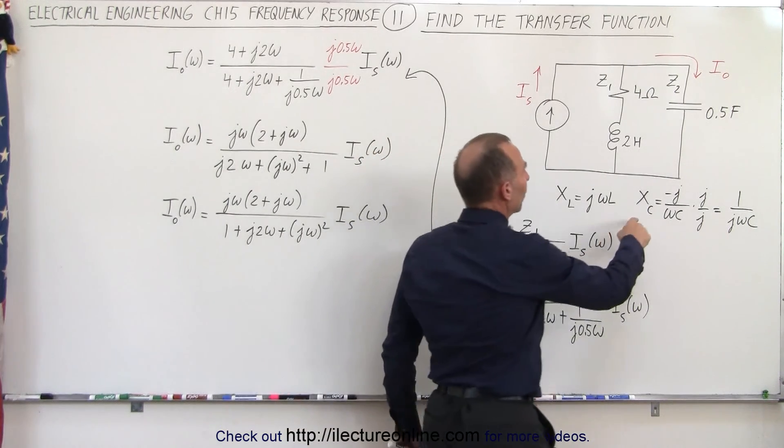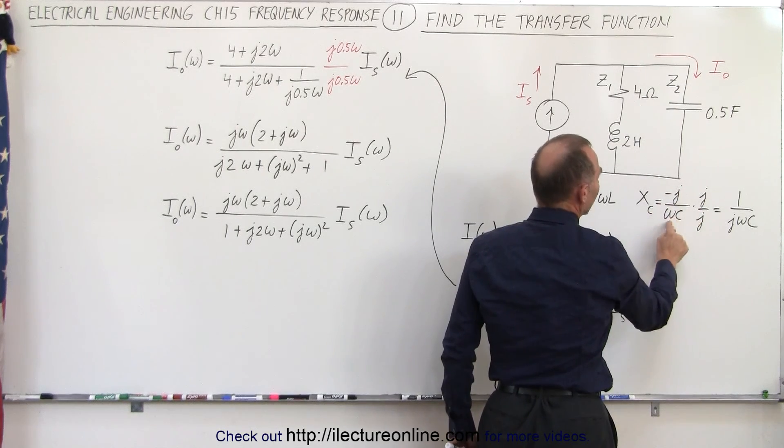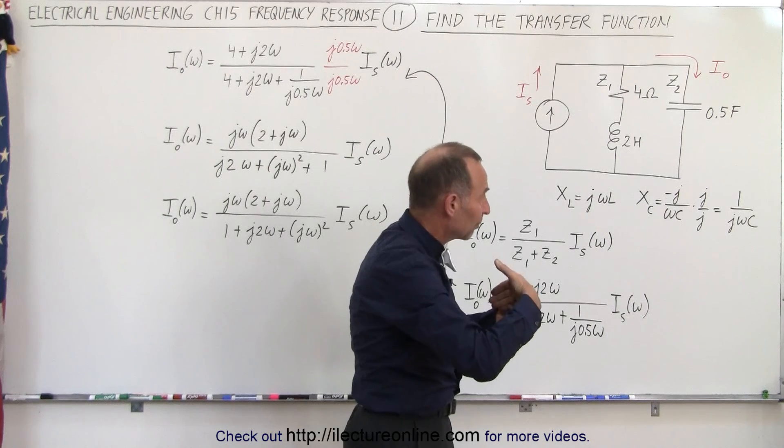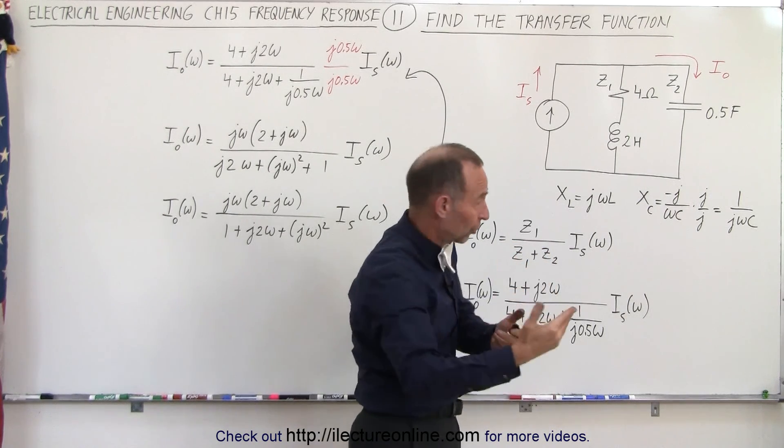In this case we have the reactance across the capacitor which is minus J over omega C. Minus J because there's again a 90 degree lag between the current and the voltage, or I should say between the voltage and the current.